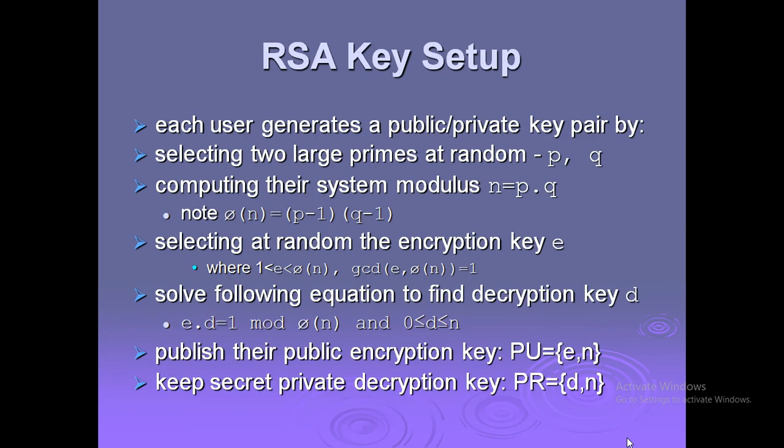RSA key generation: each user generates a public/private key pair by selecting two large prime numbers at random, p and q. Compute the system modulus n = p × q. Compute phi(n) = (p − 1)(q − 1). Then select at random the encryption key e.